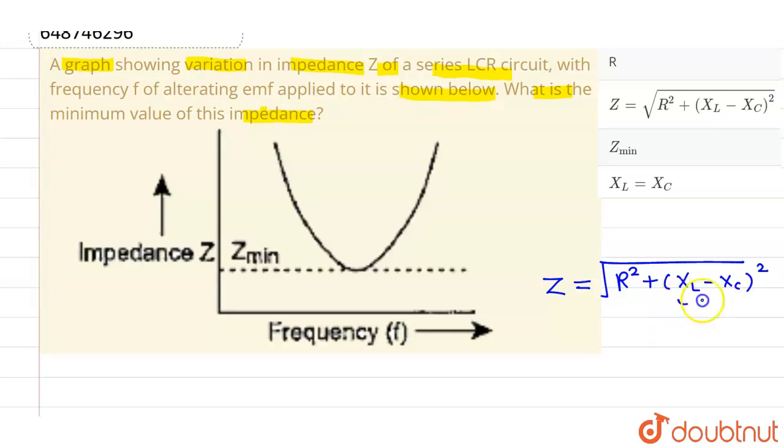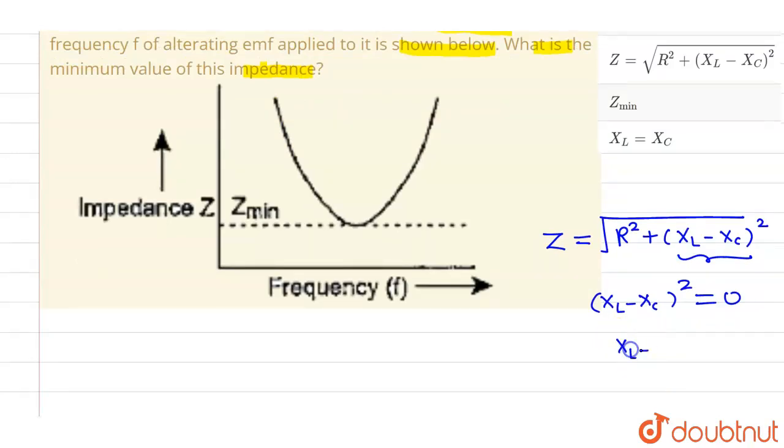Now for Z to be minimum, XL minus XC whole square must be zero. For this to be possible, XL minus XC must be zero, and for this to be possible, XL must be equals to XC.